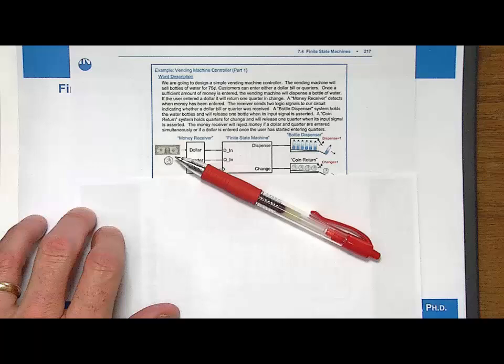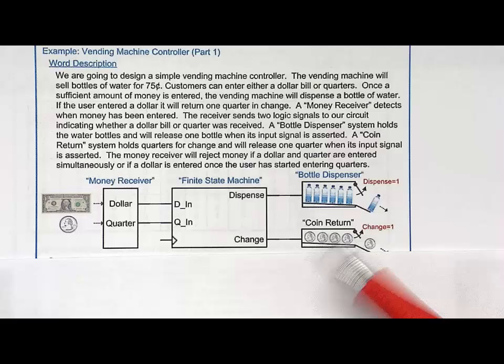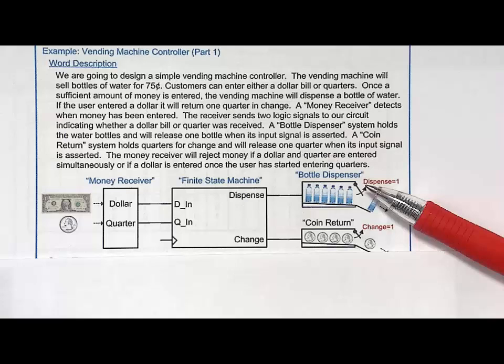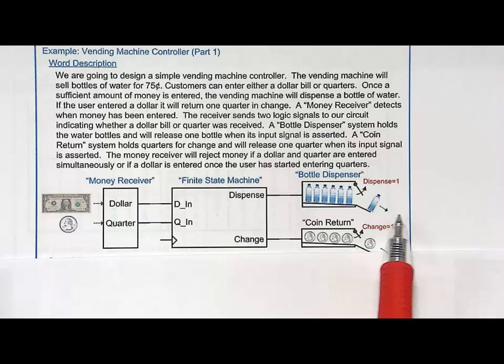This is the word description. We are going to create a simple vending machine. We're going to have two mechanical things: one that will dispense a bottle of water, and another mechanical system which will dispense a coin — a quarter. If you send a signal to the bottle dispenser, a bottle of water will come out. If you assert a signal called 'change' to the coin return, a quarter will come out.